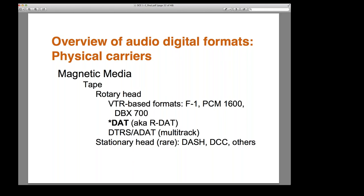Then you have DAT — digital audio tape — which we will focus on later. Also known as RDAT, Rotary Head DAT. There are also multi-track formats like DTRS — sometimes called the Tascam format — and ADAT. Multi-track means that instead of two channels (left and right), you record many channels separately — for example, in a rock band, you'd record kick drum, snare, bass, and cymbals in separate tracks that are then mixed together. Archives generally don't have these formats unless they're part of a recording studio collection. They were very popular among musicians, and ADAT was popular because it was much more portable with very high quality.